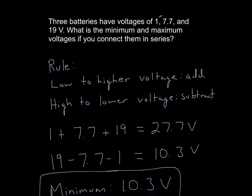Now, if I change it and I put all three of these in series, but I want to make it a minimum voltage, I order it 19, 7.7, and then 1. And so when you go from high voltage to low voltage, you subtract and therefore get 10.3.